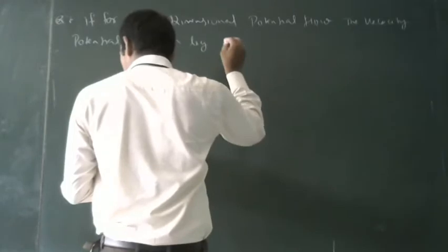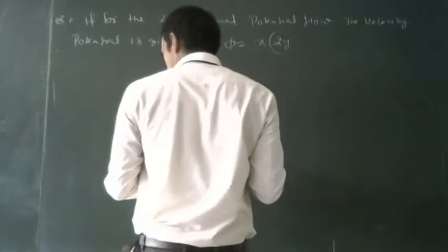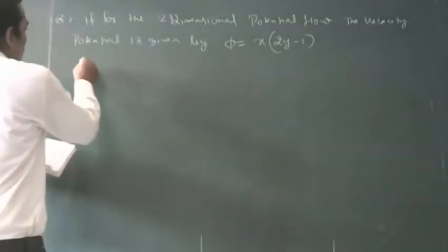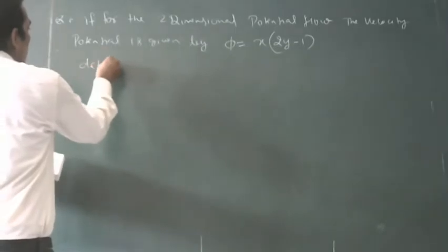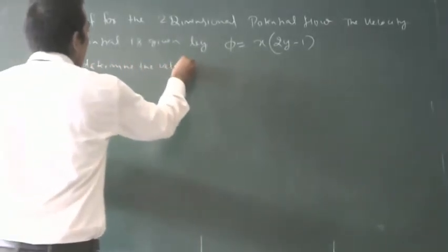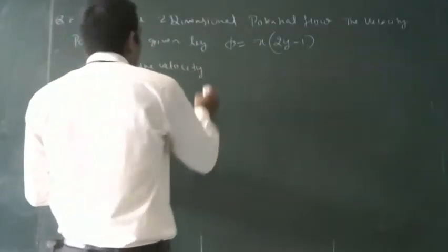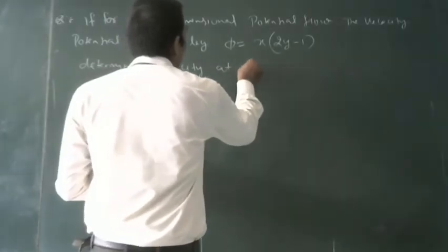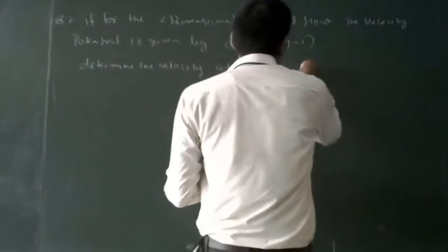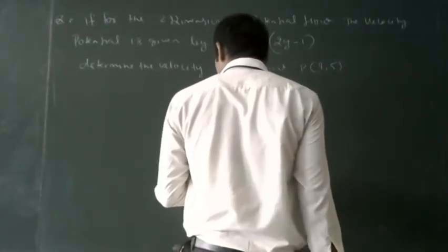φ equal to x(2y-1). Determine the velocity at the point P(0,5).